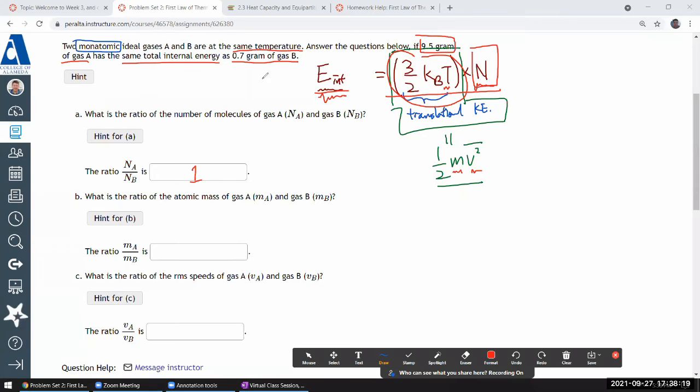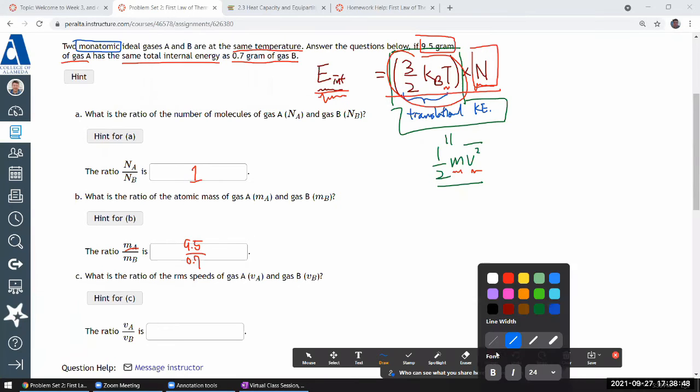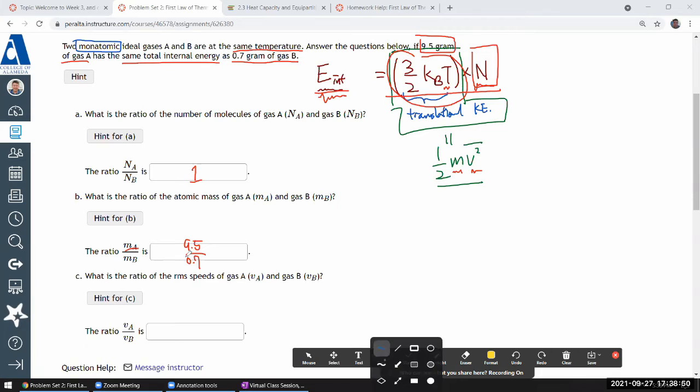So this difference in the masses of the gas must come from their molecular mass difference. What is the ratio of the atomic mass of gas A and gas B? Well, if the same number of molecules lead to these two, then ma meaning the mass of a single molecule of gas A must be 9.5 over 0.7 times the mass of the single molecule of gas B. And you can really only say this portion after having figured out this portion.